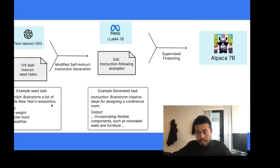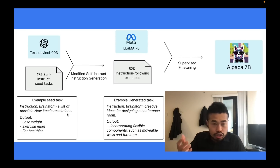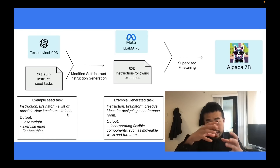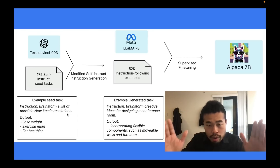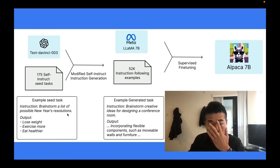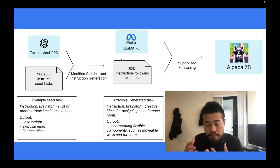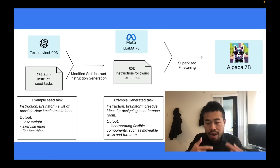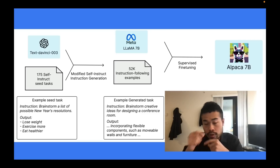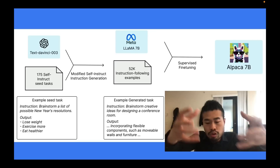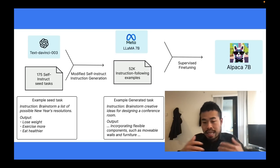This solution was proposed by Stanford — the model is called Alpaca. Alpaca is a model that learns from GPT-3.5, or what I'd just call ChatGPT. You use ChatGPT to generate data, then use that data to teach Alpaca. The base model is LLaMA, a 7-billion parameter language model trained by Meta. This base language model does not have instruction-following capabilities — it just does simple next-word prediction.